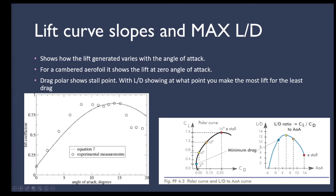Lift curve slopes and max lift-over-drag graphs come out of X-Flyer and show different aerodynamic characteristics to help you define aerofoils and design for what you want. Your lift curve slope shows the amount of lift generated for a given angle of attack — at 5 degrees you're generating just shy of 0.5 CL. As you increase angle of attack, there's a point where lift plateaus and then drops — this is stall, where you keep increasing angle of attack but lift drops off and you can fall out of the sky.